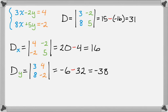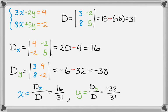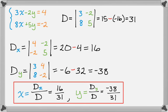And then to write down the solutions, x is D sub x over D, which is 16 over 31. And then y is D sub y over D, which is negative 38 over 31. And that's the solution.